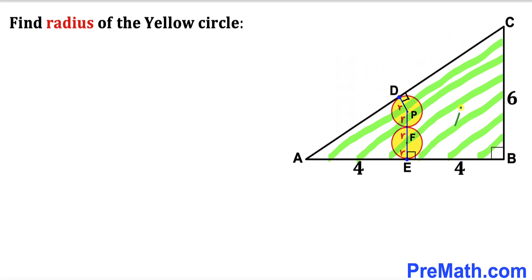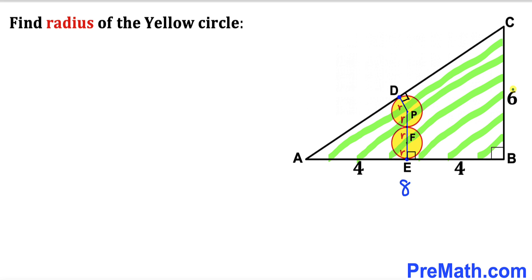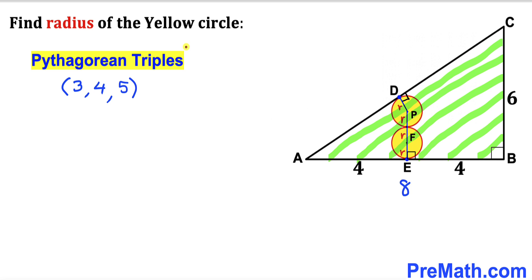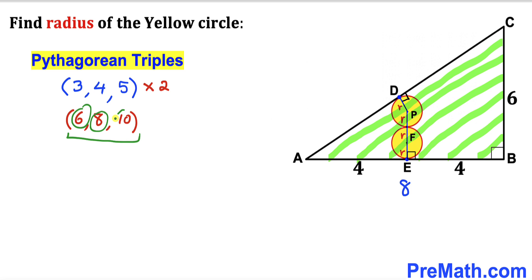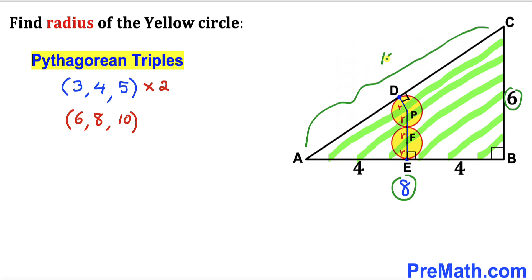Let's focus on right triangle ABC. Side length AB is 4 plus 4, which gives us 8 units, and side BC is 6 units. Recalling the Pythagorean triplet 3-4-5 and multiplying by 2 gives us 6, 8, and 10. Since AB is 8 and BC is 6, the hypotenuse AC is 10 units.